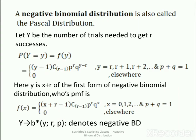A negative binomial distribution is also called the Pascal distribution. Let Y be the number of trials needed to get r successes. Then P(Y = y) = (y−1 C r−1) · p^r · q^(y−r), where y varies from r, r+1, r+2, … and p + q = 1, equal to 0 elsewhere. In Pascal's distribution, Y is nothing but x + r from the first form of the negative binomial distribution.